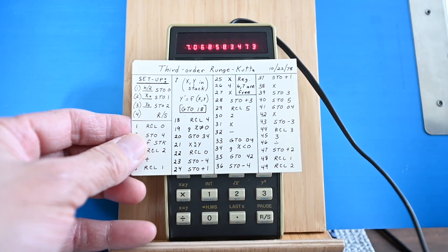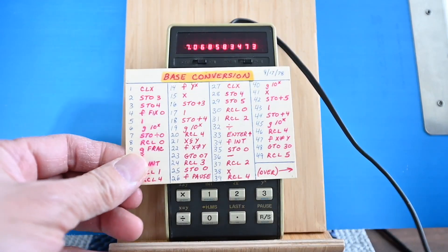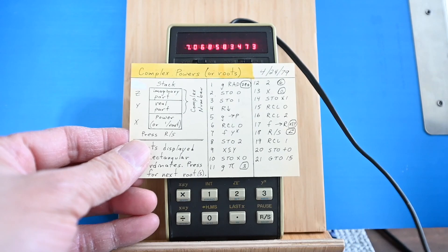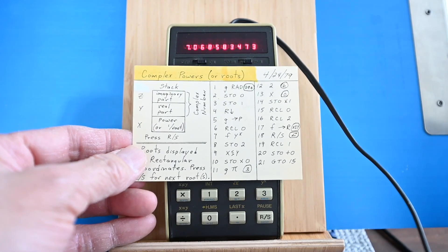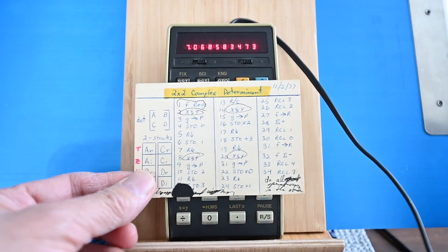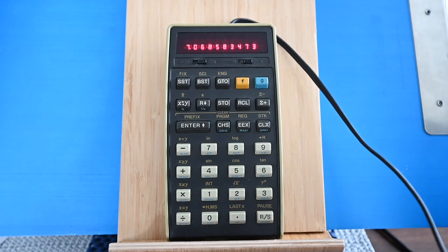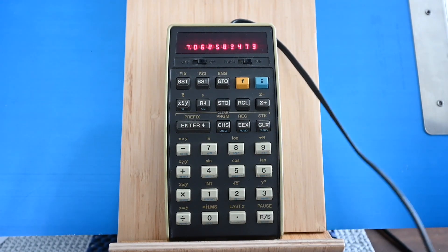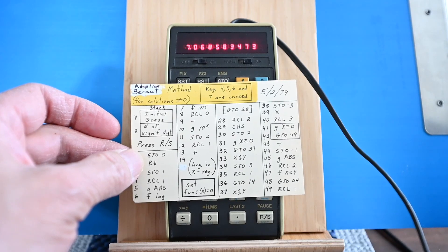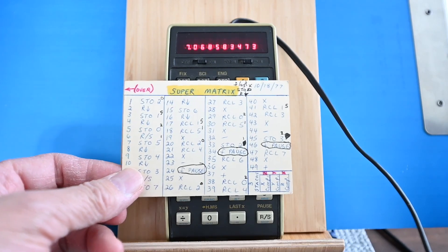Third order Runge-Kutta calculation. Some type of base conversion. Complex power or roots. Two by two complex determinant. Adaptive secant method. And something to do with super matrix.